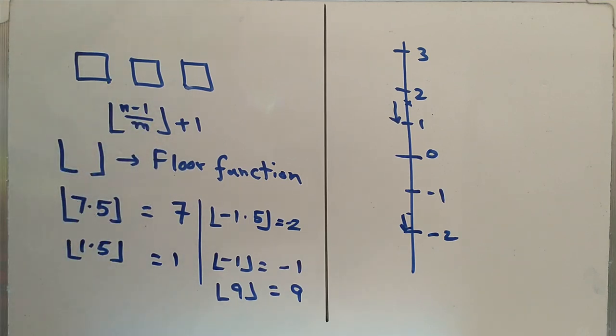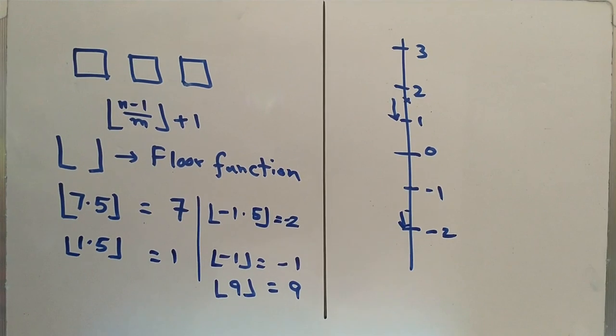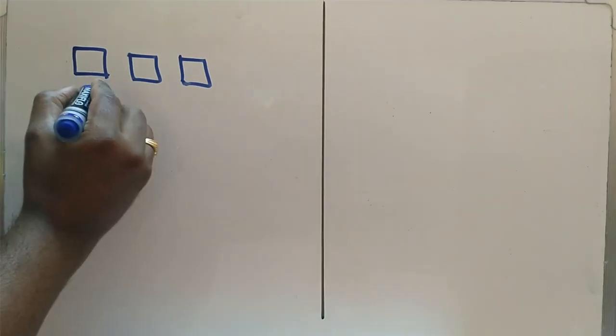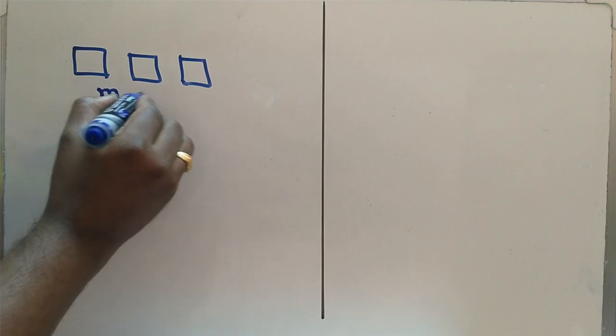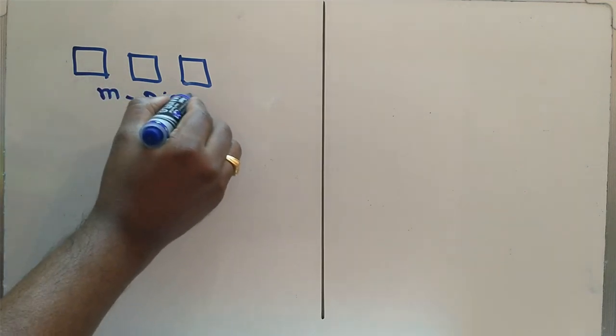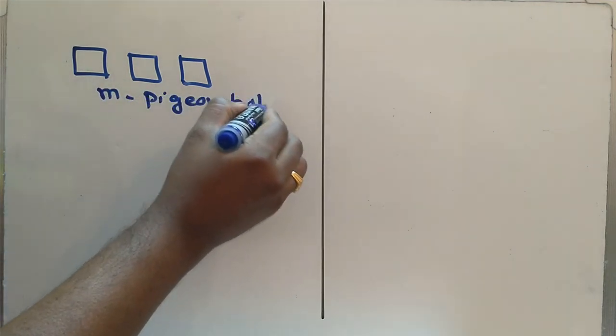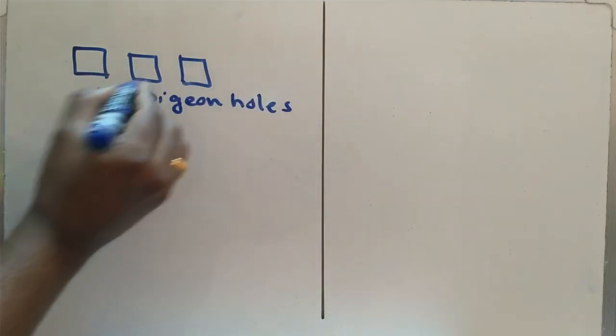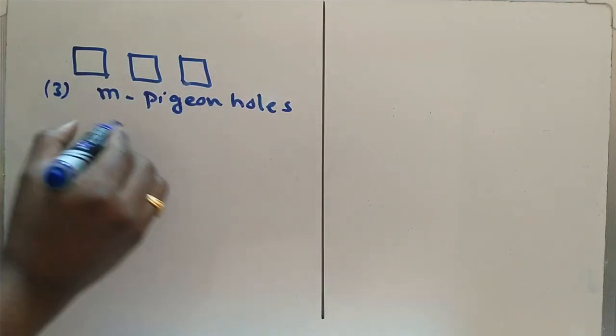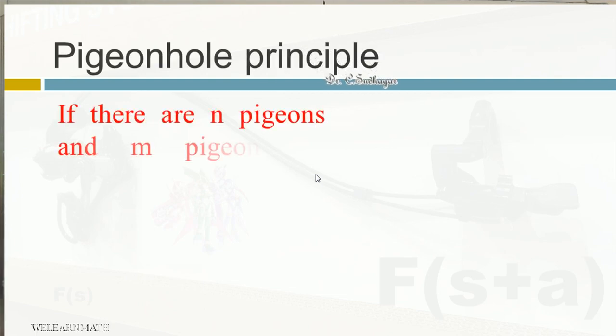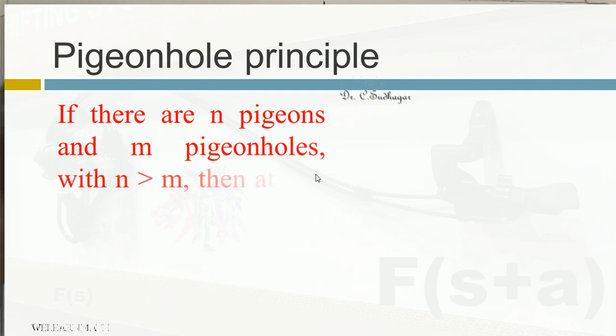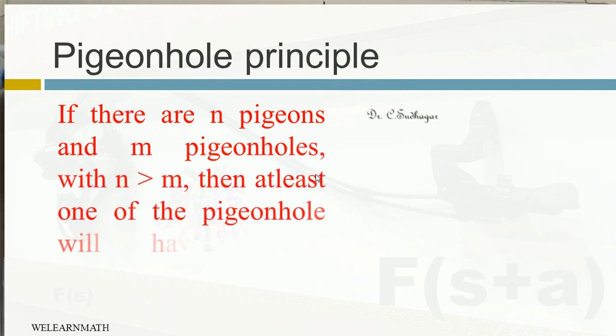That floor function we are going to use it in the pigeon hole principle. Now let us see what is the pigeon hole principle. If there are m pigeon holes, for example here we are having three pigeon holes, and if you are having n pigeons, that is our students. So how many students are coming inside? One, two, three, and fourth student has to share in any one of the table.